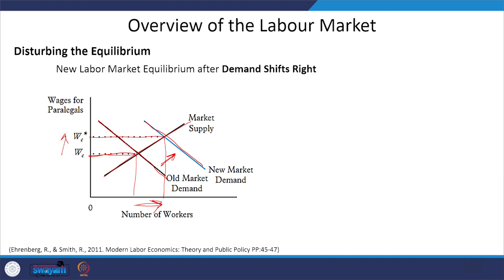The wage rate at which demand equals supply is the market clearing wage. At wage rate W-E, employers can fill the number of openings they have, and all employees who want jobs in this market can find them. At W-E there is no surplus and no shortage. All parties are satisfied and no forces exist that could alter this wage. The market is in equilibrium in the sense that the wage will remain at W-E.